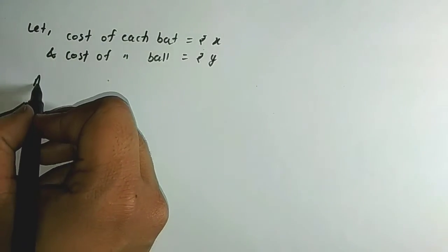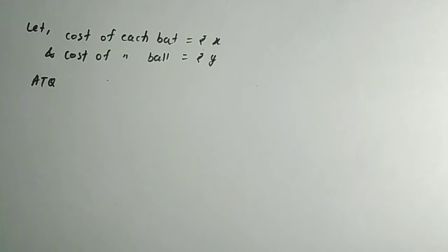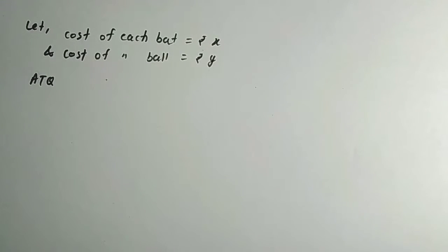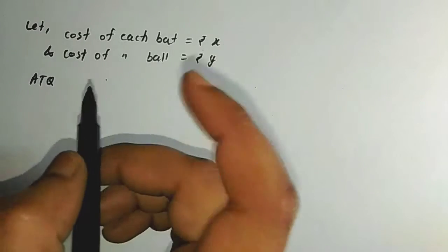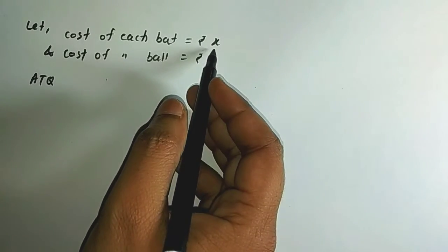Now, according to the question, there is a condition given. According to the question, 7 bats and 6 balls cost Rs.3,800. If the cost of one bat is x, then the cost of 7 bats will be 7x.